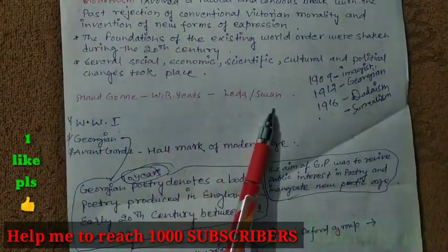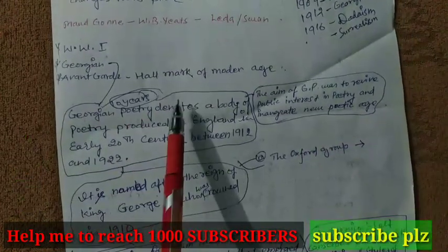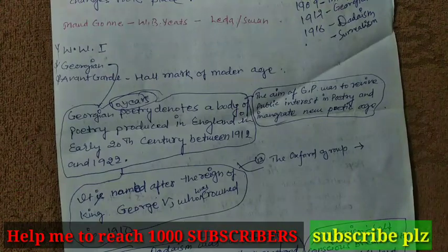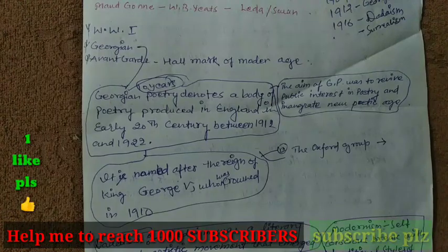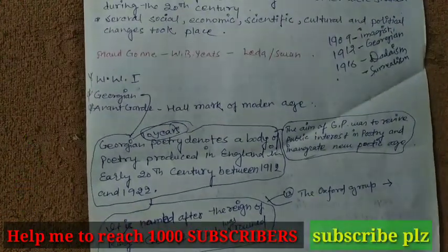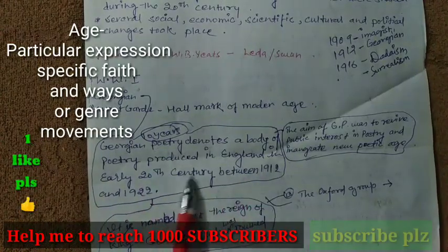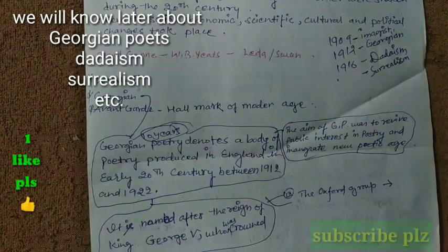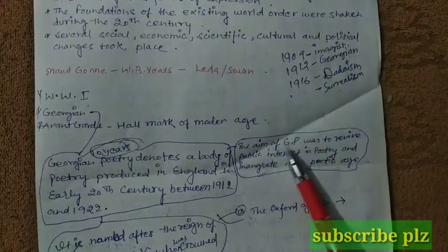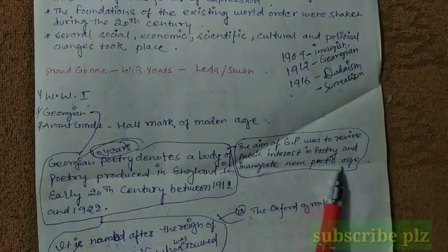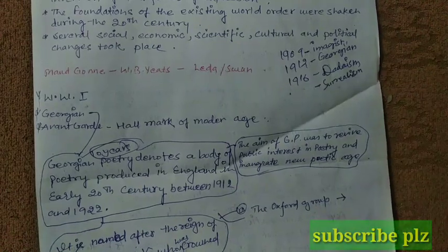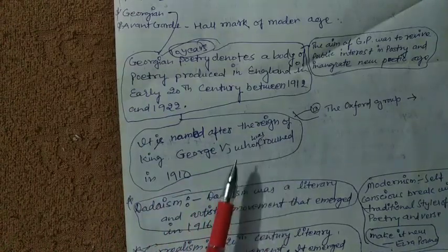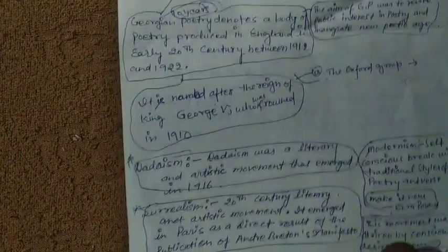Now let's talk about Georgian poetry. Georgian poetry denotes a body of poetry produced in England in the early 20th century, between 1912 and 1922. You can take this short note for your English literature exams. The aim of Georgian poetry was to revive public interest in poetry and inaugurate a new poetic age. It is named after the reign of King George V, who was crowned in 1910.